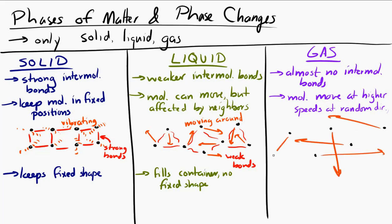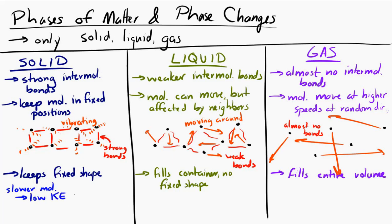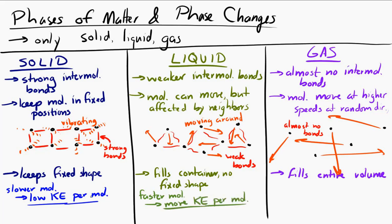Now let's think about what that means in terms of the kinetic energy and potential energy of the molecules for each phase. For a solid, the molecules are not moving very quickly on average, so the average kinetic energy per molecule is relatively low. For a liquid, the molecules have more freedom and are moving around more, so the average kinetic energy per molecule is higher than in a solid. And for a gas, the molecules are moving around relatively quickly, so the kinetic energy per molecule is high compared to a liquid or solid.